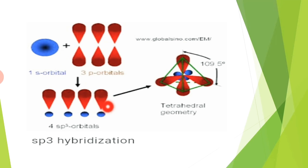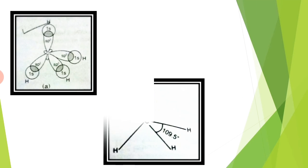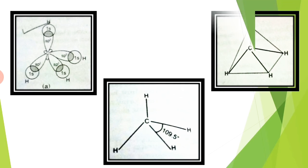These hybrid orbitals arrange themselves in space so that they are as far apart as possible. When you see the picture, there is a nucleus at the center with orbitals pointing to the corners. This is a tetrahedral arrangement with an angle of 109.5 degrees.